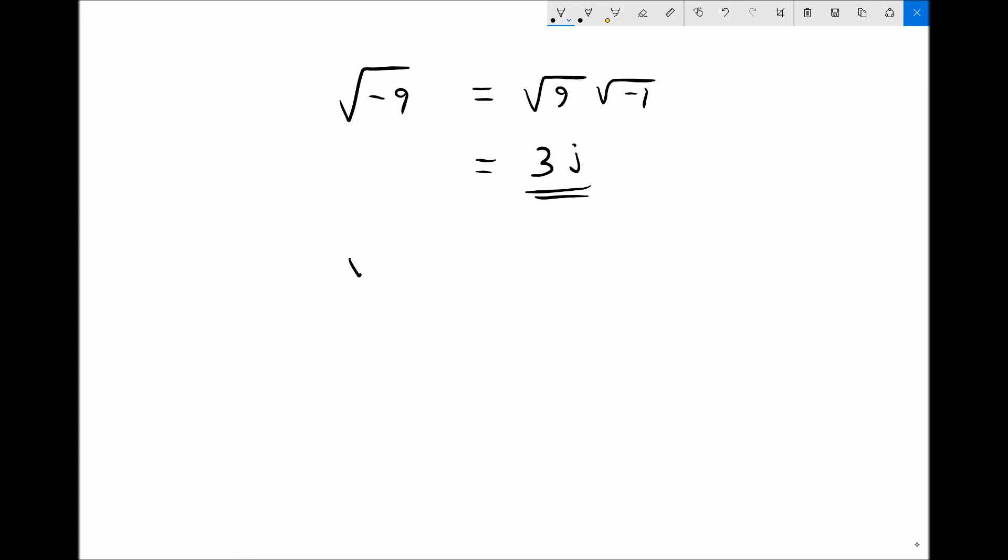If we were to have root minus 36, we can separate that into root 36 root minus 1. We're separating it into positive and negative components. Well root 36 is just 6, and root minus 1 is just j.